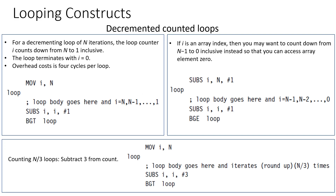In this topic we are going to see how we can use looping and different optimization techniques in looping. First is to use decremented loops. Always keep in mind that decrementing loops are always better than incremental loops. Let me briefly tell you why. Let's say we want to do something like iterating from zero to n.